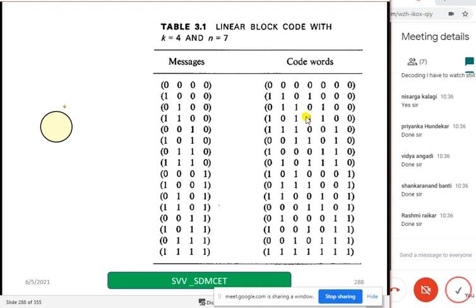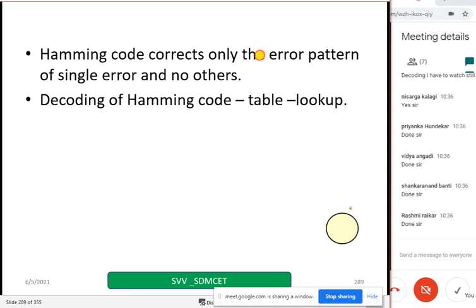Hamming code corrects only the error pattern of a single error and not more than that. Decoding of Hamming code uses a lookup table. You have spent a lot of time on the lookup table. You can prepare a lookup table and from that decoding can be done.